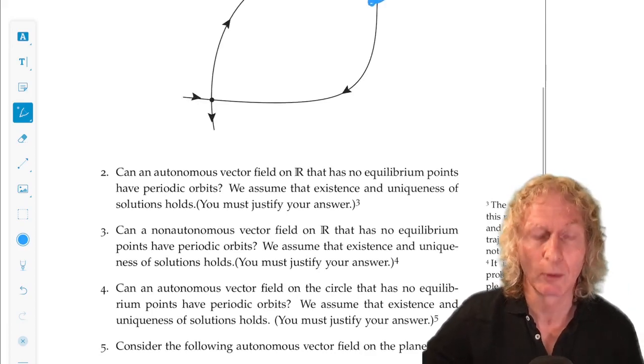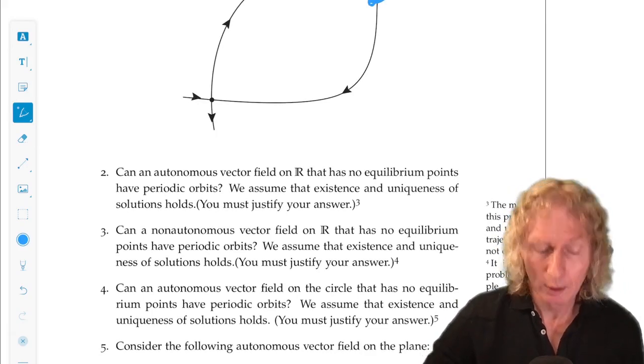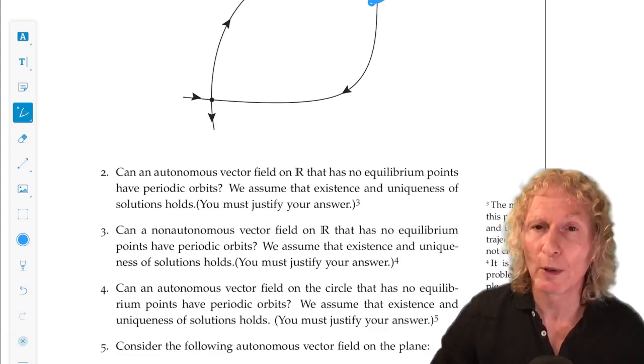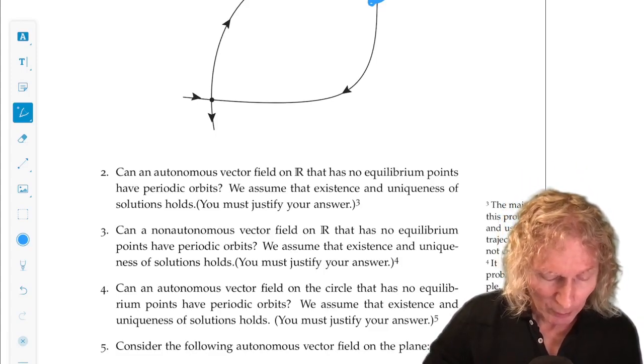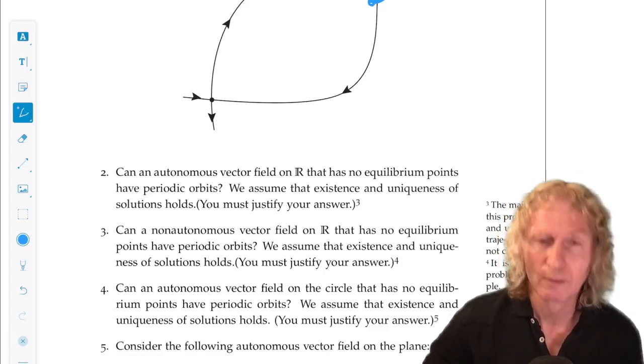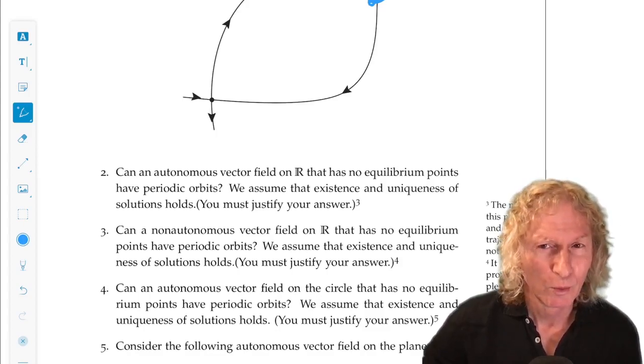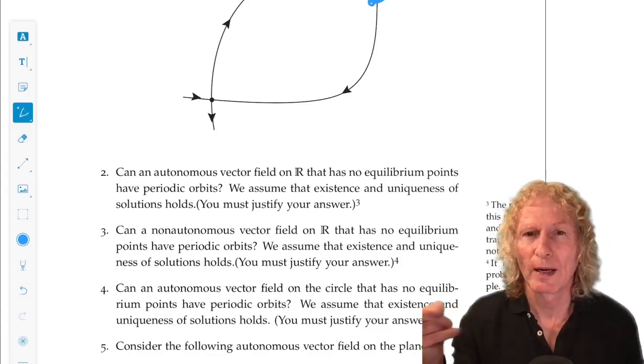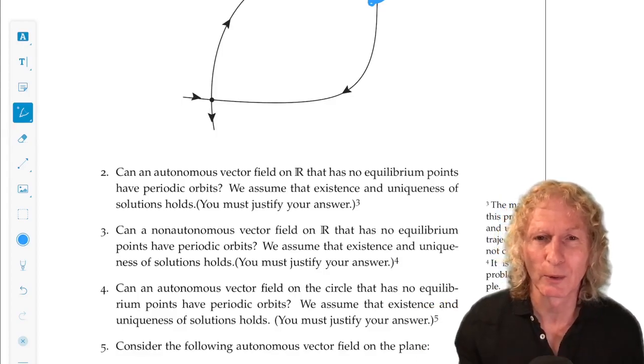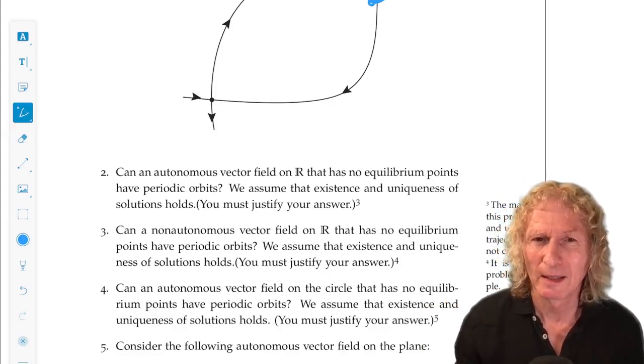Next problem. Can an autonomous vector field on the real line that has no equilibrium points have periodic orbits? No. Why? Well, it would have to turn around on the real line. Turn around and come back. And that cannot happen.